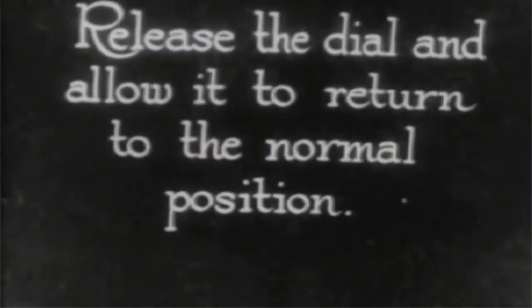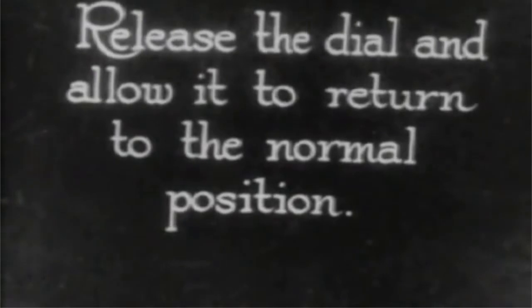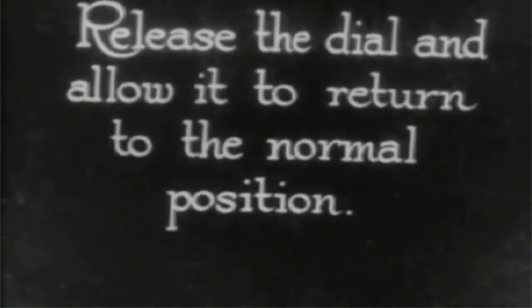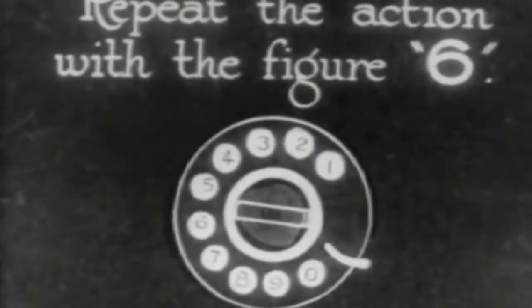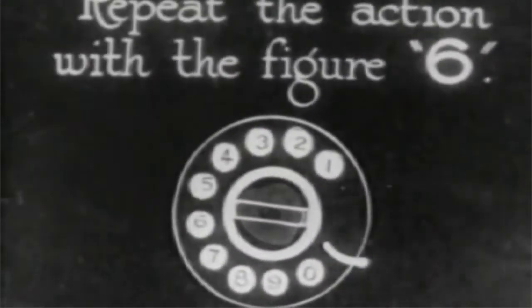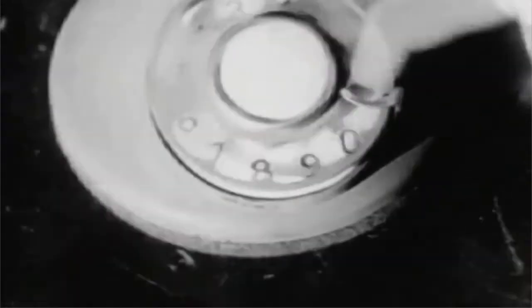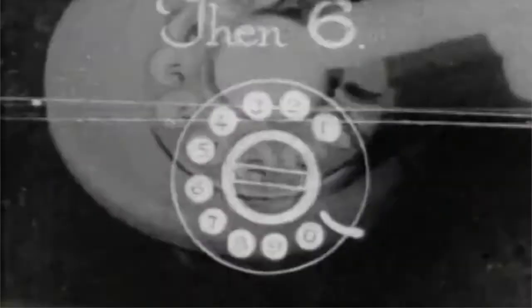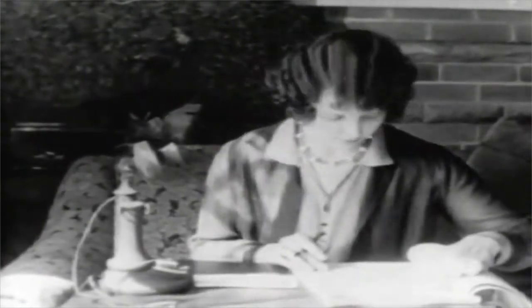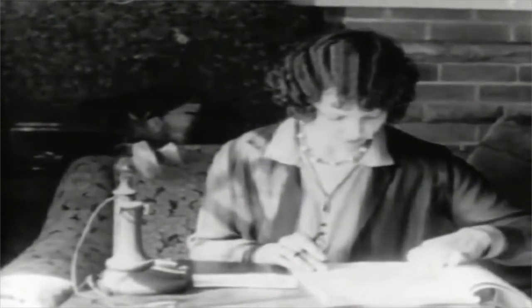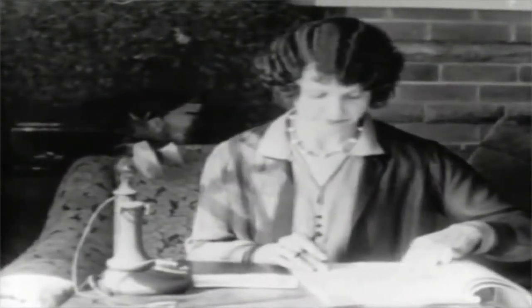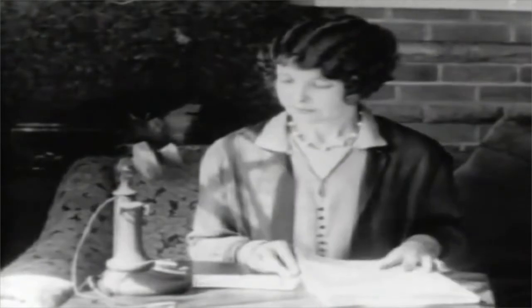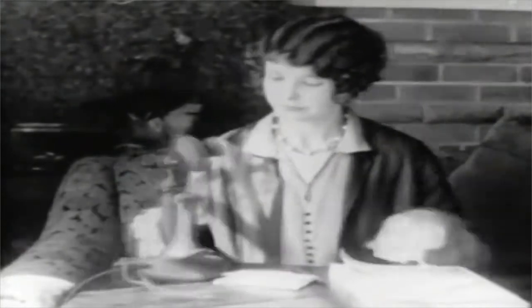To dial local calls, dial the two letters and the five figures of the telephone number. For example, to call Alpha 9-1234, dial A, L, then 9, 1, 2, 3, 4.